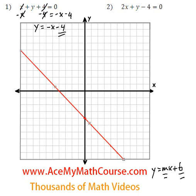Here we go. That's it. So this line right here is our line x plus y plus 4 equals 0.